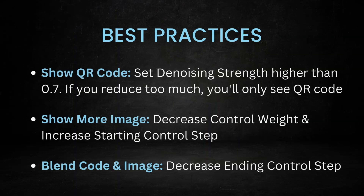Here are some tips to get better results. The denoising strength is typically set higher than 0.7 — if you reduce it too much, you will only see the QR code. To show more of the prompt image, decrease the control weight and increase the starting control step. Decrease the ending control step to stop ControlNet earlier so that the QR code and the image can blend more naturally. And this concludes our third technique.